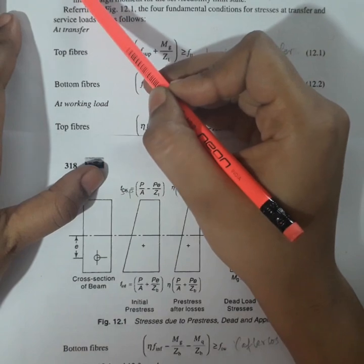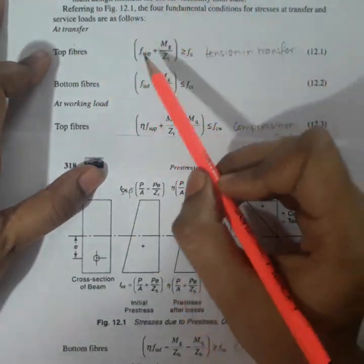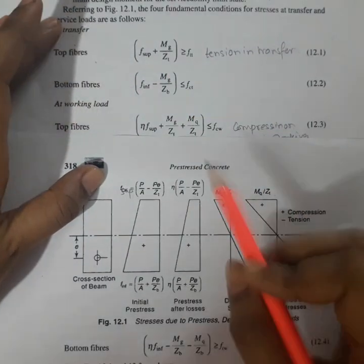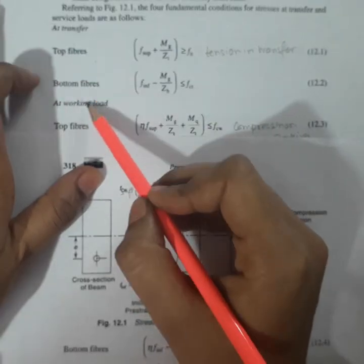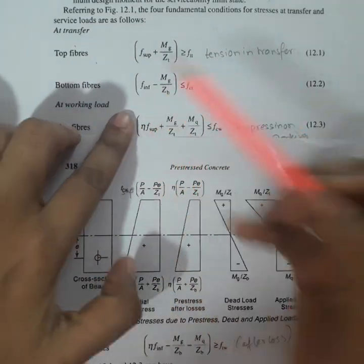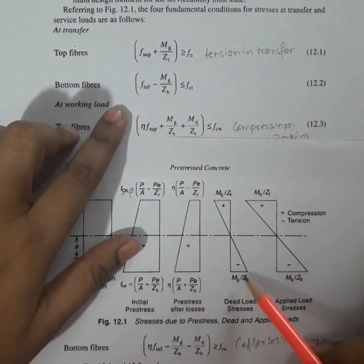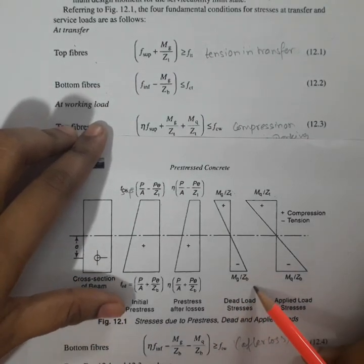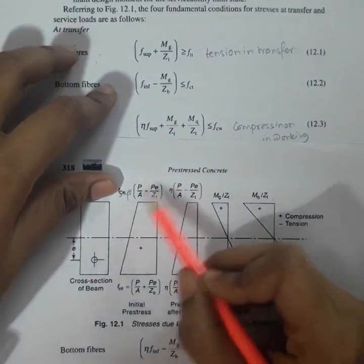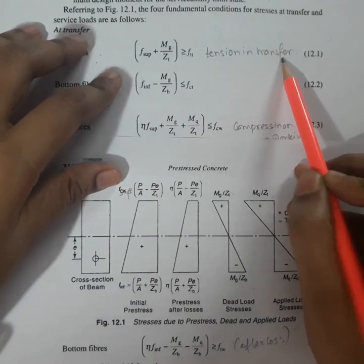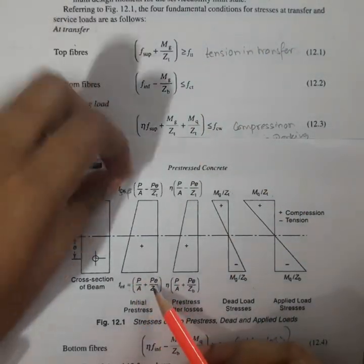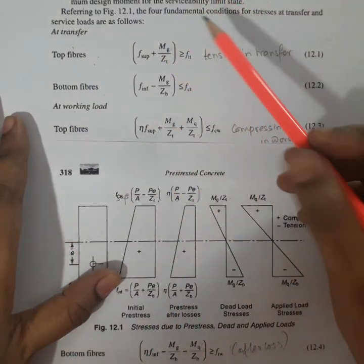Satisfying condition one at the transfer: the stress at the top fiber will be the initial stress at the top fiber plus the dead load. At the bottom fiber, at transfer — remember, at transfer there is no consideration of pre-stress loss — it will be the initial pre-stress minus the dead load stresses at the bottom fiber. These should be greater than or equal to the tension at transfer, and less than or equal to the compression at transfer.